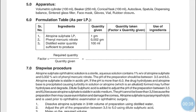The formulation of Atropine Sulfate Eye Drops contains: Atropine Sulfate IP 1 gram, Phenyl Mercury Nitrate 0.002 gram, and Distilled Water quantity sufficient to produce 100 ml. These quantities are given for 100 ml, but we need to make 10 ml. The factor is 10 divided by 100, which equals 0.1. Multiply each quantity by 0.1 to get the quantities to be taken.